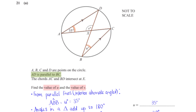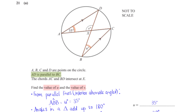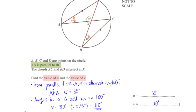Finding angle U: chord DC subtends angle U on the circumference of the circle, so U equals 35 degrees. To find V, since AD and BC are parallel lines, angle ADB and angle U are alternate angles, so ADB also equals 35 degrees. Since all angles in a triangle add up to 180 degrees, V equals 180 minus 2 times 35, giving V equals 110 degrees.